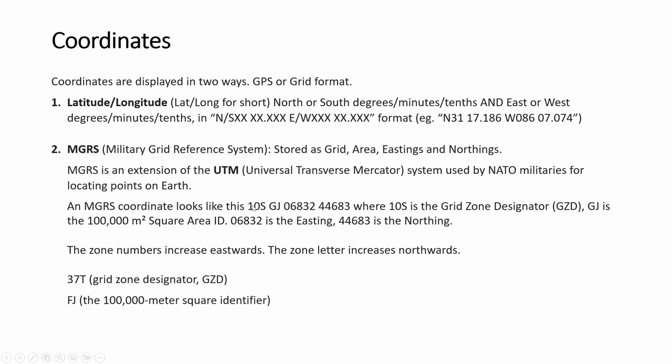In MGRS there is a grid zone, then an identifier, and then a pair of numbers. It's always easting and then northing, as opposed to lat-long which is north-south and then east-west. So it can be a bit confusing.